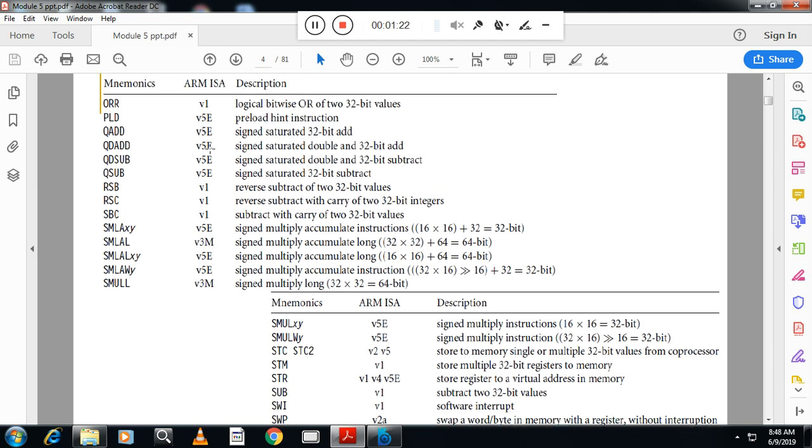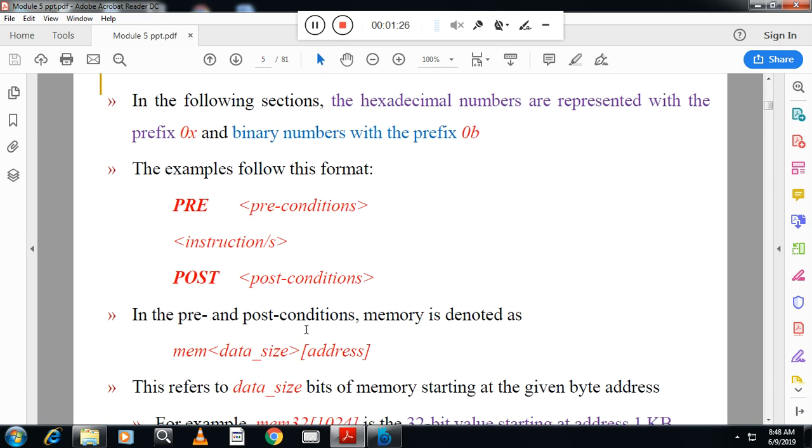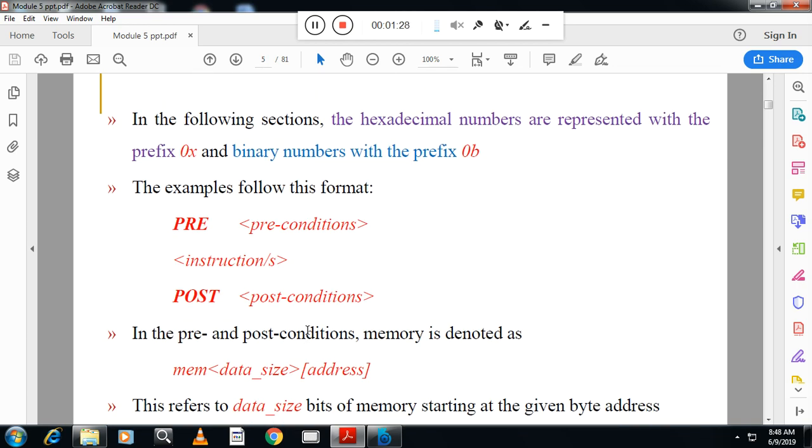Similarly we have other instructions, logical instructions and store and multiple instructions. For instructions there are two conditions. One is the pre-condition, second one is the post condition. Post condition is the condition after executing the instructions, that is the status of the registers after executing the instructions.